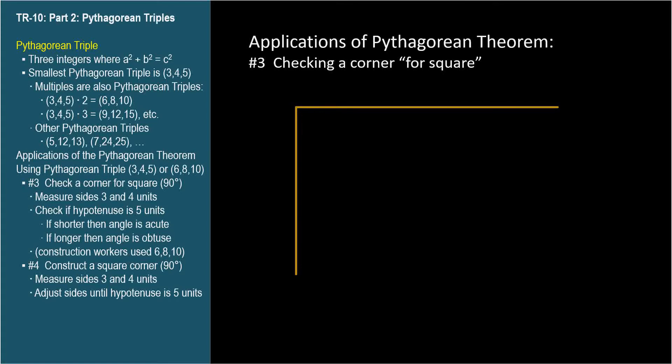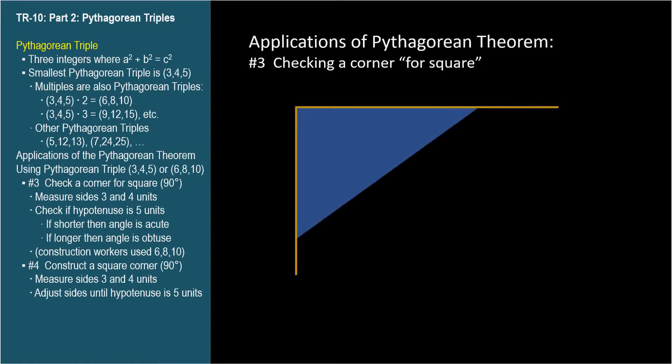Application number 3 of the Pythagorean theorem is checking a corner for square, which is determining whether or not an angle is 90 degrees. Here, we're shown the top view of a fence, and we want to know if the corner is 90 degrees.